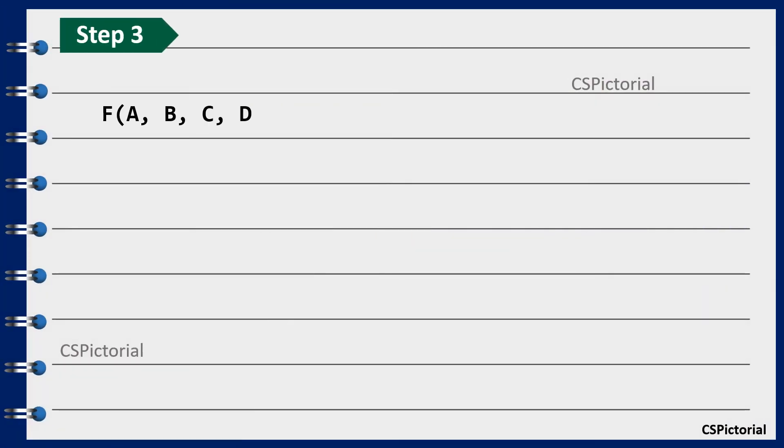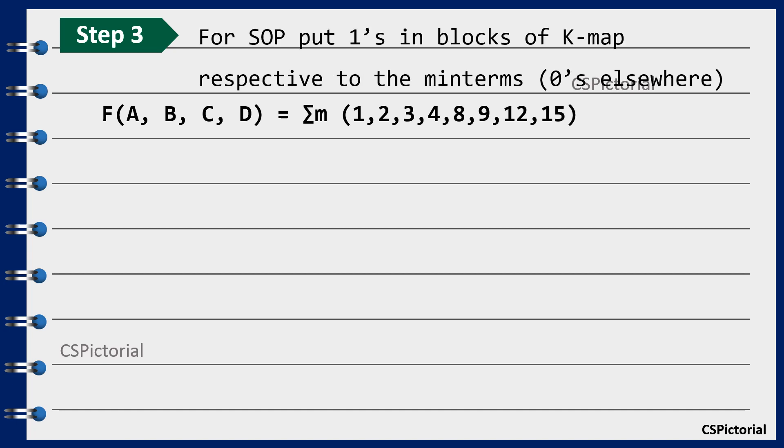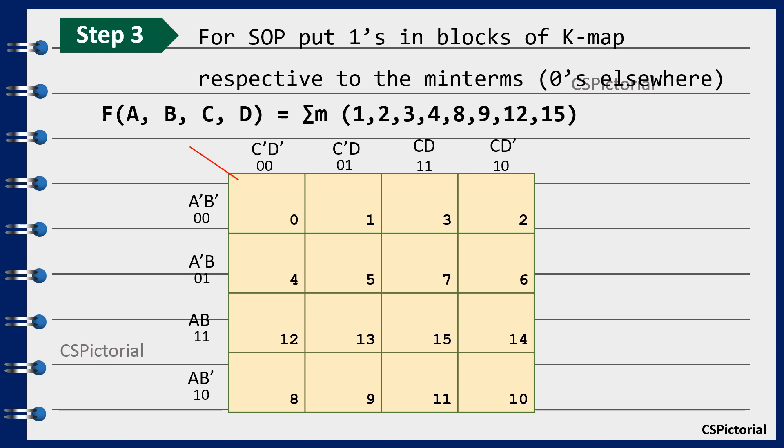Now as it is decided that the given Boolean function has min terms, put ones in blocks of k-map respective to the min terms. Do not forget the order in which the k-map cells are to be filled. It follows the grey code sequence. It is always a better practice to first number out the cells as shown here then fill up the cells.